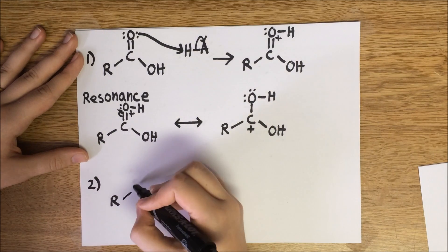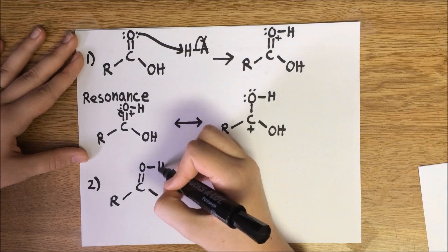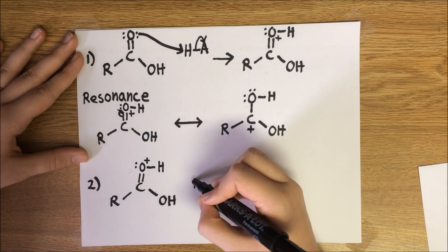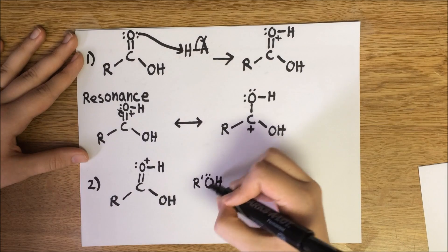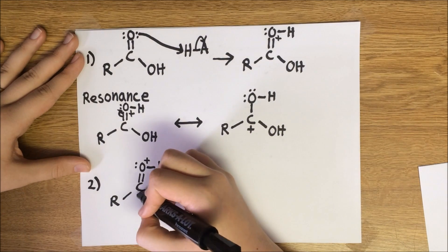The slight positive charge on carbon is enough to encourage the alcohol to attack with its electrons. This pushes the pi electrons up to oxygen while the alcohol oxygen is forming a new bond to carbon.